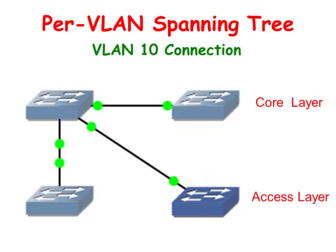For example, this is a logical description of the physical network we just looked at for VLAN 10. The switches in VLAN 10 are all connected by the left core switch. Packets can be sent by a computer host to the core layer and then either to the other access layer switch or routed to the internet.